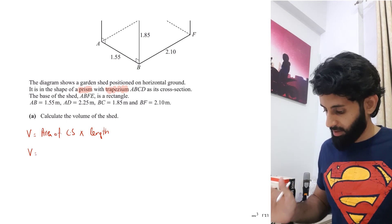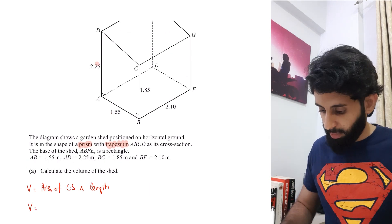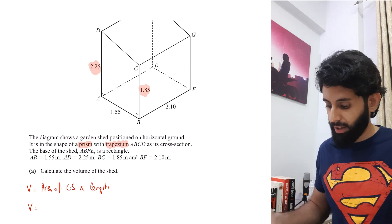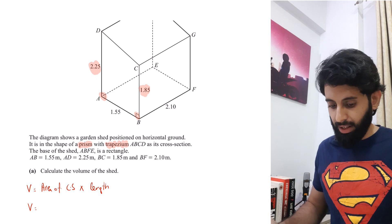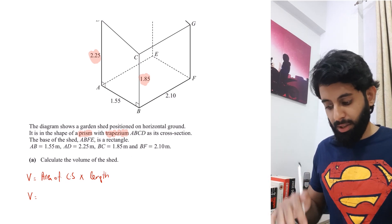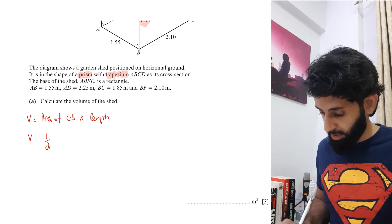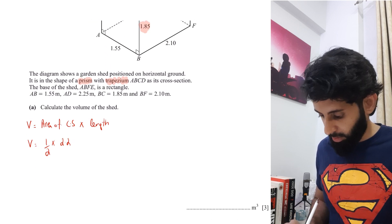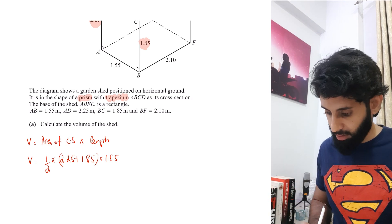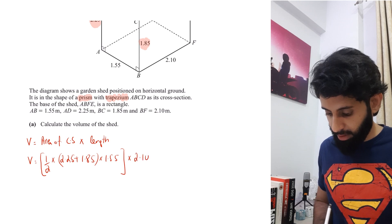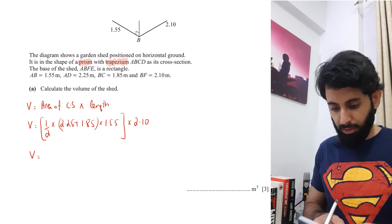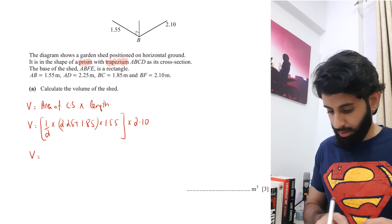The cross section is the trapezium, so I'll use the trapezium area formula: half × (sum of parallel sides). The parallel sides are 2.25 and 1.85 — they're parallel because both make a 90-degree angle with AB. The height of the trapezium is 1.55. So the area = 0.5 × (2.25 + 1.85) × 1.55, and this is then multiplied by the length of the prism, which is 2.10.